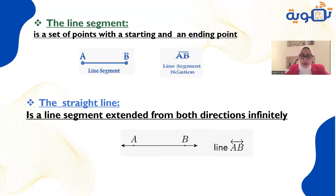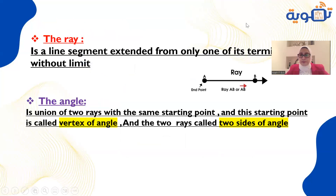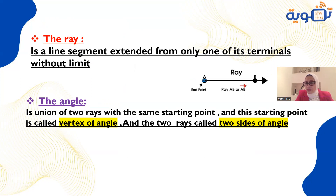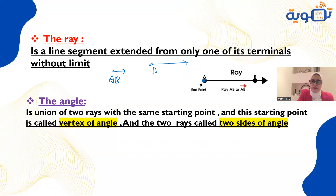The ray is a line segment extended from one side only. It has a starting point, so we must begin reading from the starting point. If I have this ray, it's named ray AB. If the ray goes the other way, it will be named ray BA. I write a small arrow in the same direction.